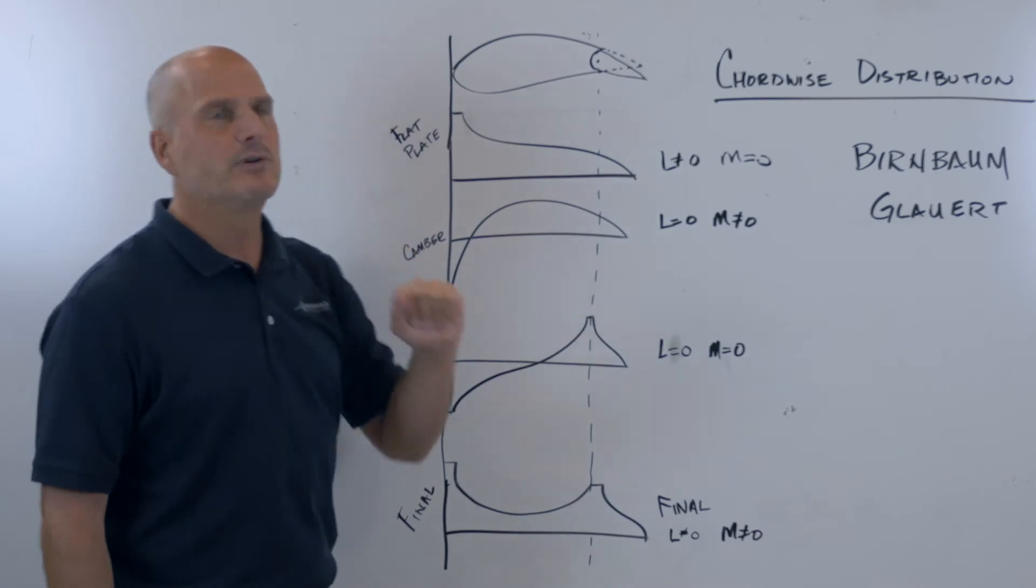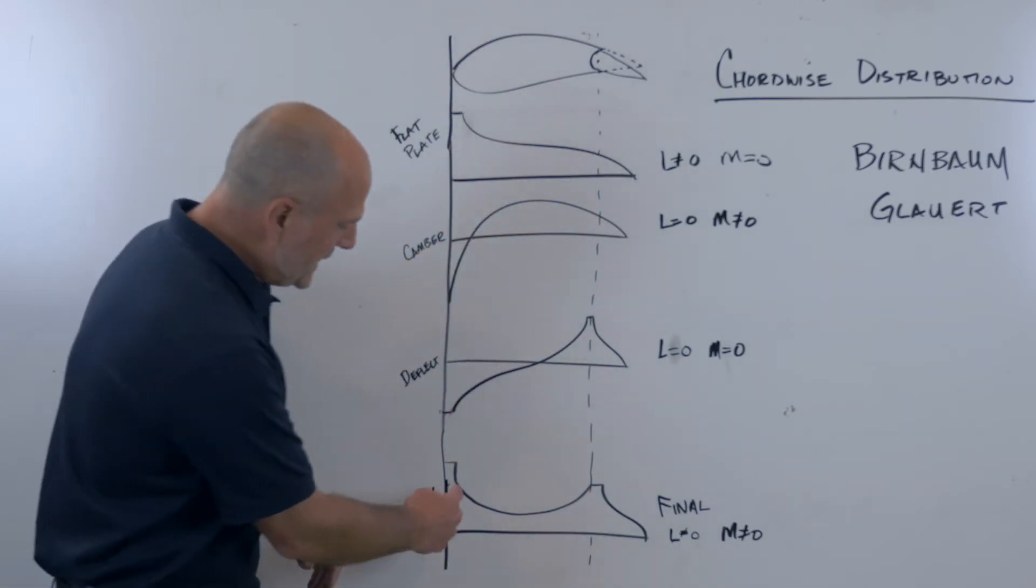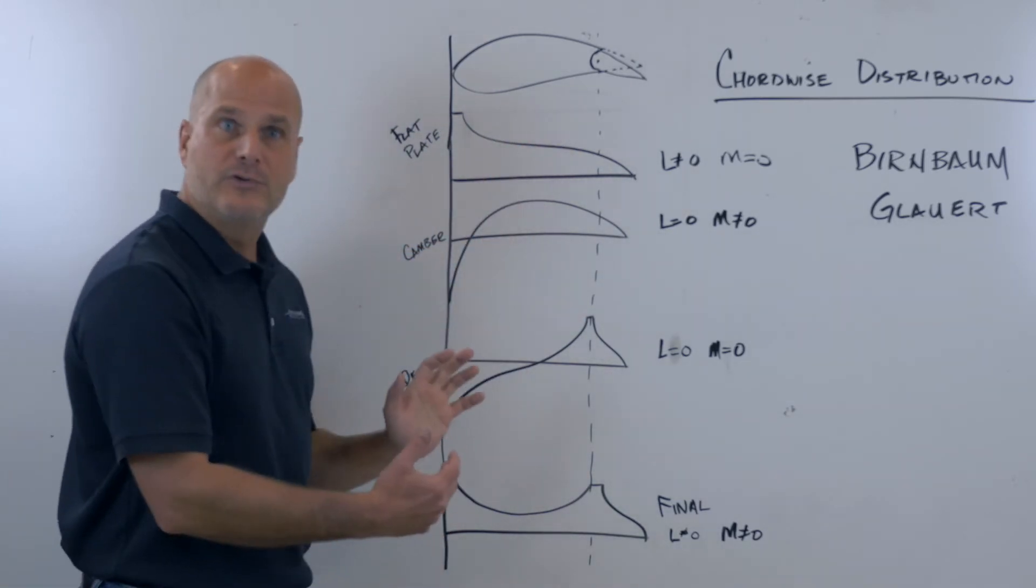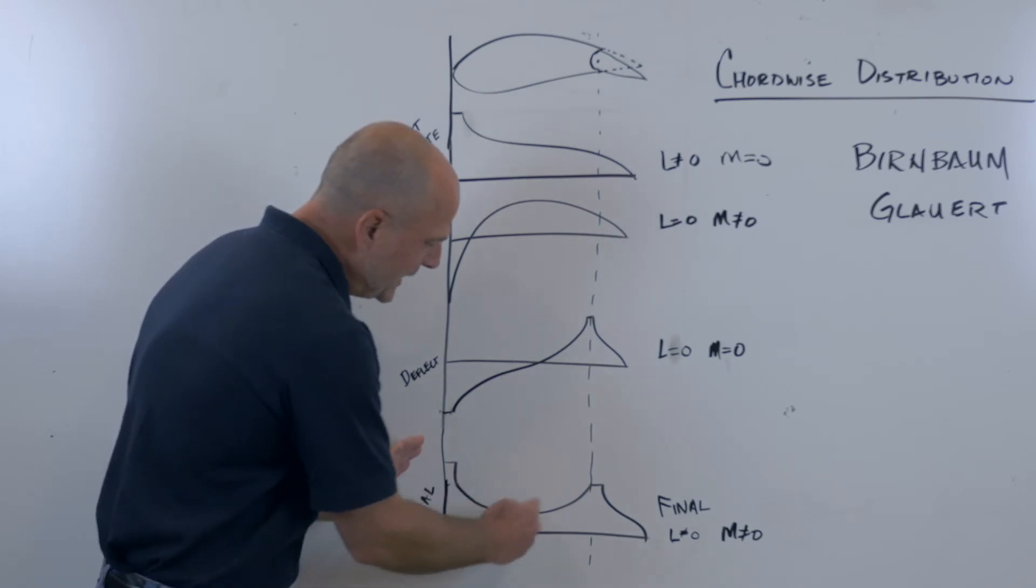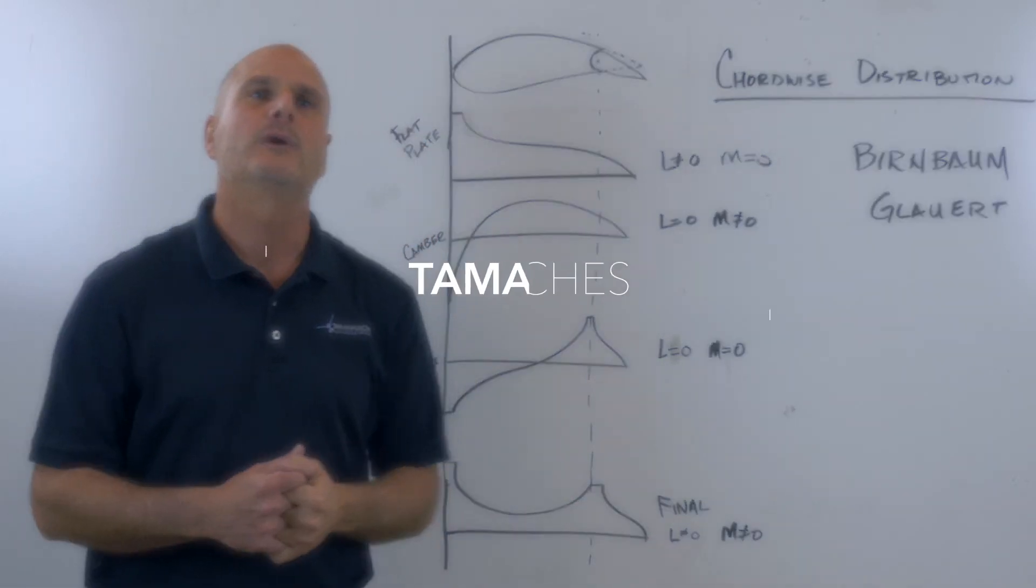So if this wing is producing five pounds, or this section of wing produces five pounds, we can split it up accordingly and we know how to make the load on the wing.